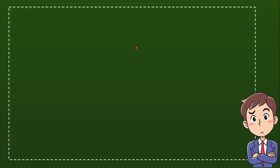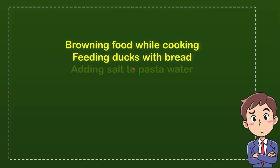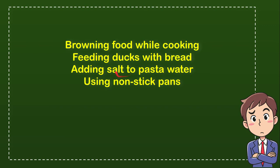Here are the options: the first option is browning food while cooking, the second option is feeding ducks with bread, the third option is adding salt to pasta water, and the last option is using a non-stick pan. From these four options, what do you think is the correct answer?